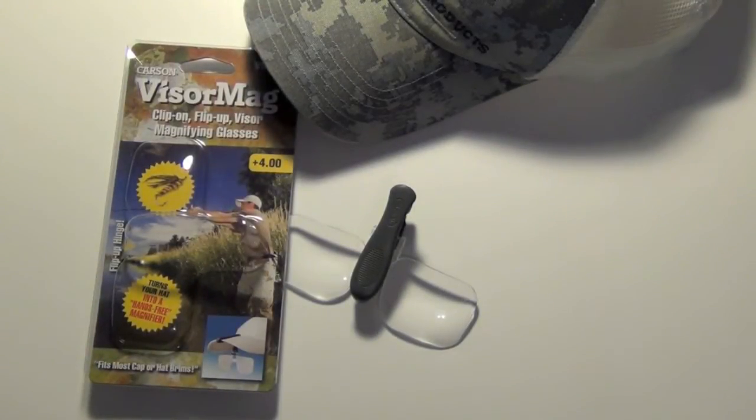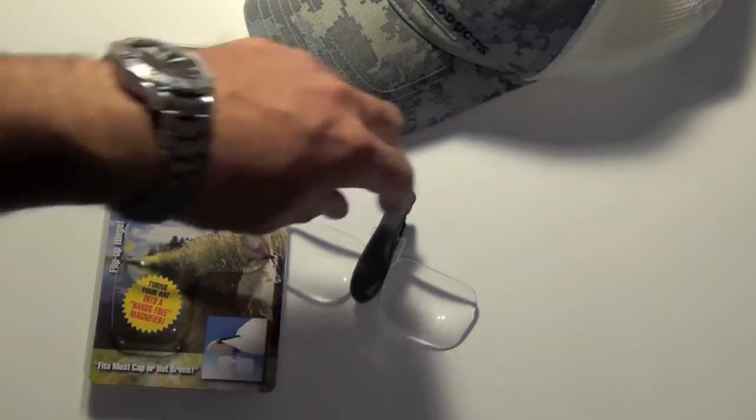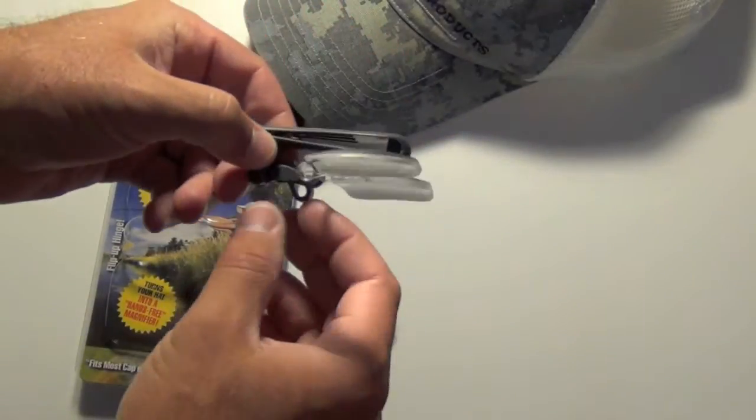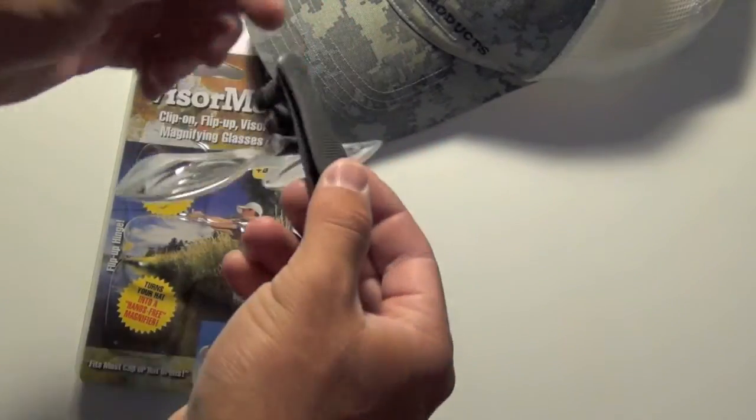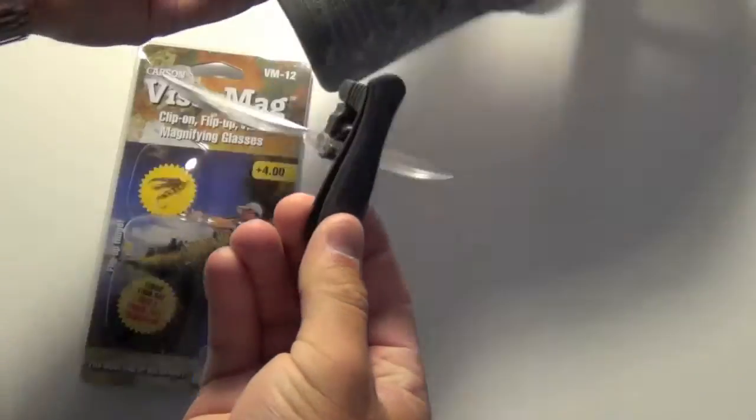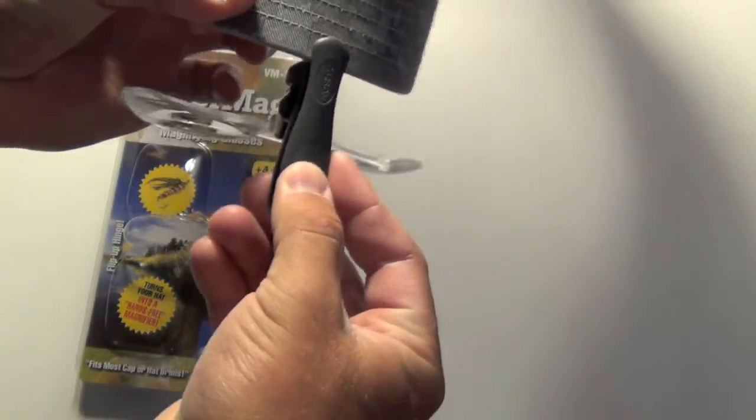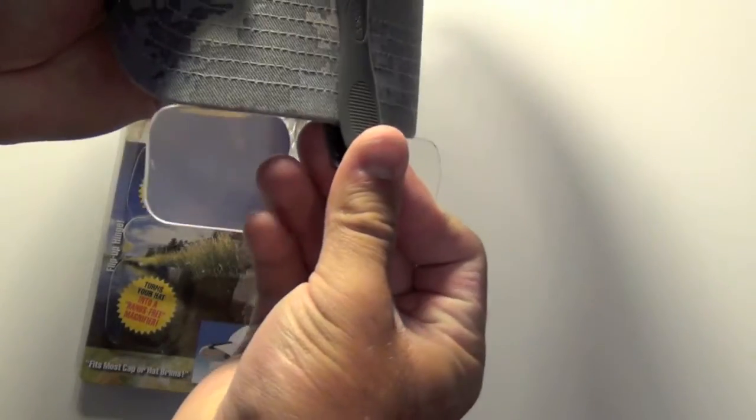Let's take a look at the visor magnifiers. These are a nifty little device that clips right onto the front of your hat brim.